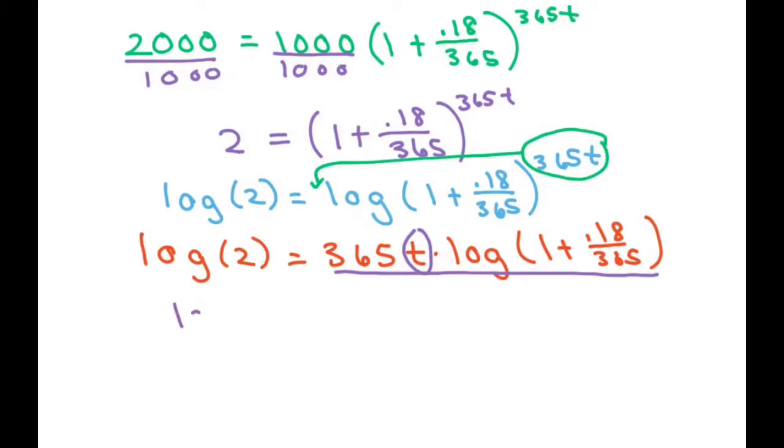We're going to put that in parenthesis like that, divide it by 365 times log of 1 plus 0.18 over 365.